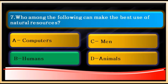Obviously, the answer is human beings. Humans have knowledge and can use it to convert resources, so humans can make the best use of natural resources. Computers are useless without humans. Option C, 'man,' is an incomplete term as it should include women too, which is why it is wrong. Animals can't make the best use of resources. The answer is B: humans.